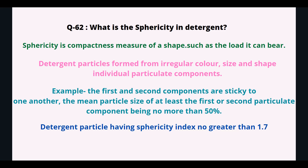What is sphericity in detergent? Sphericity is a measure of compactness of a shape. Detergent particles are formed from irregular colors, sizes, and shapes as individual particulate components. The first and second components may be sticky to one another. The mean particle size of at least the first or second particulate component should be no more than 50 percent, and detergent particles should have a sphericity index no greater than 1.7.